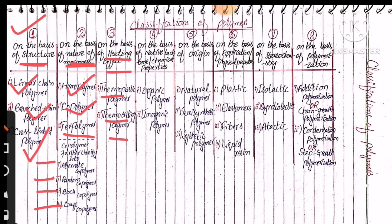On the basis of native backbone or chemical properties, we can classify polymers into two main classes: first is the organic polymer and second is the inorganic polymer. On the basis of origin, polymers can be further classified into natural polymer, semi-synthetic polymer, and synthetic polymer.